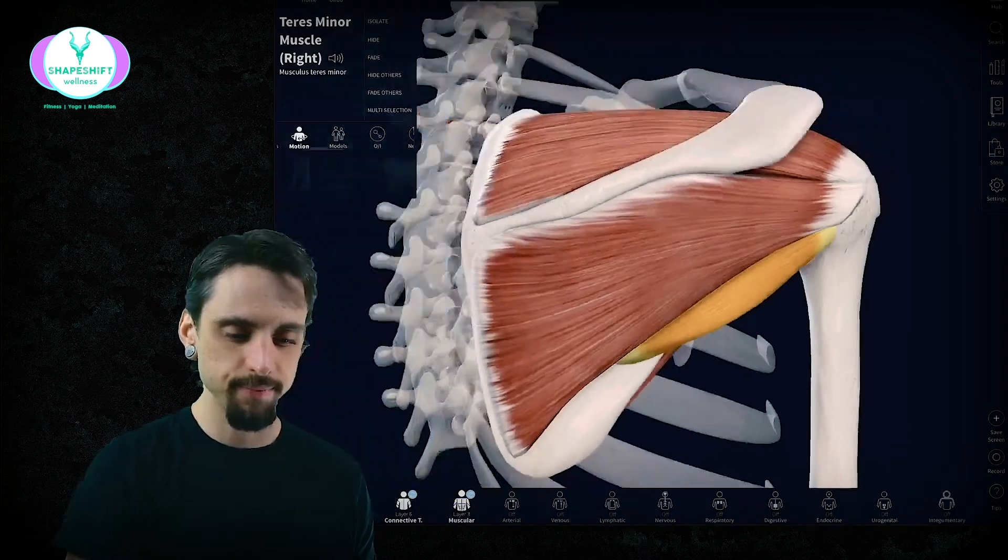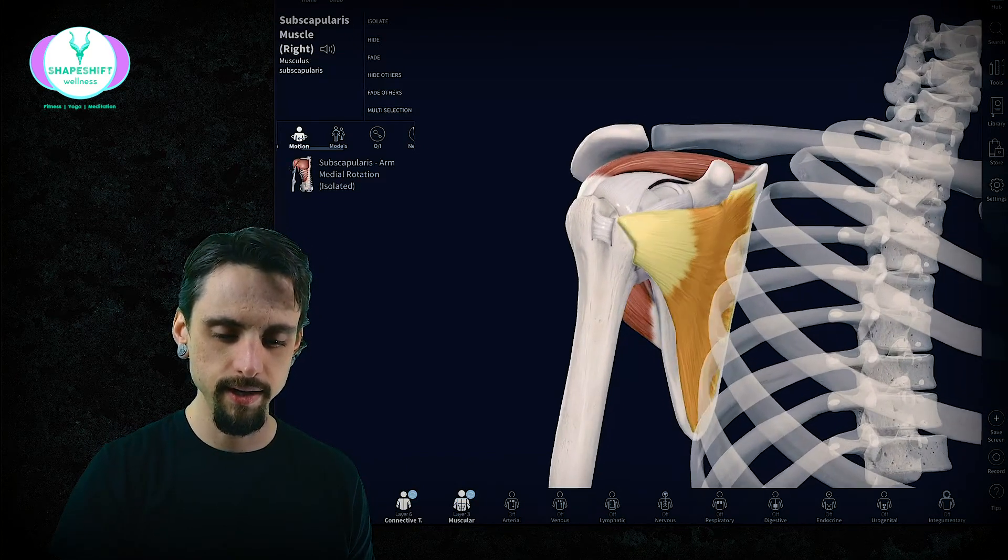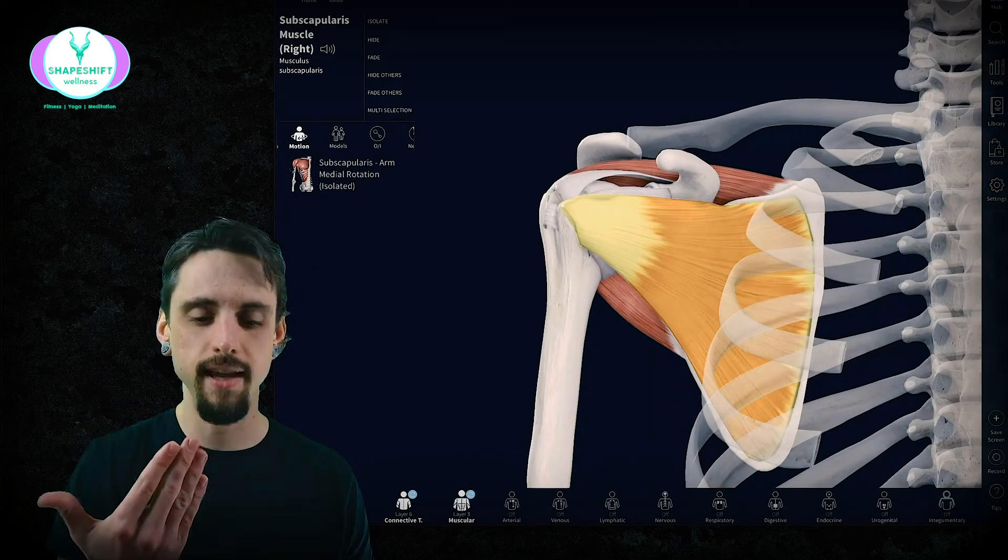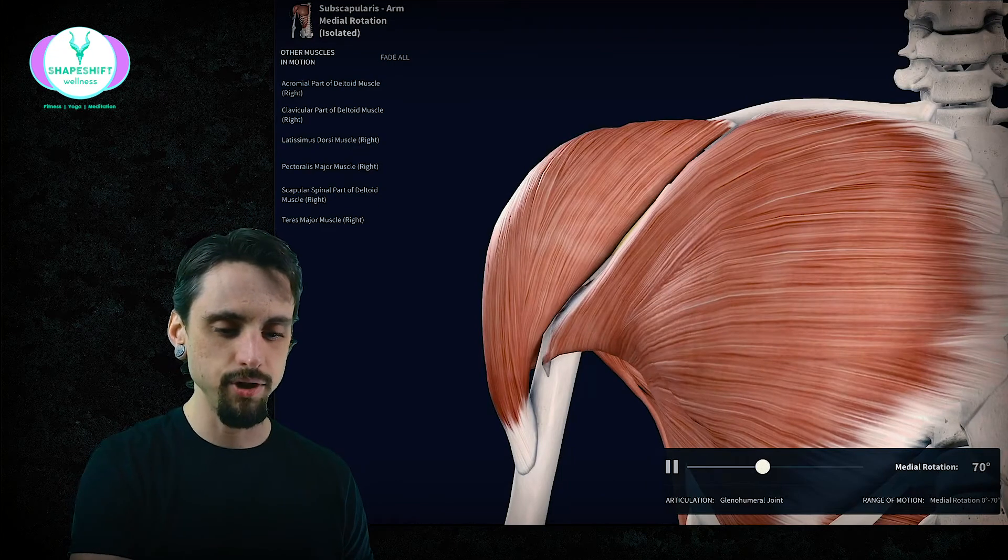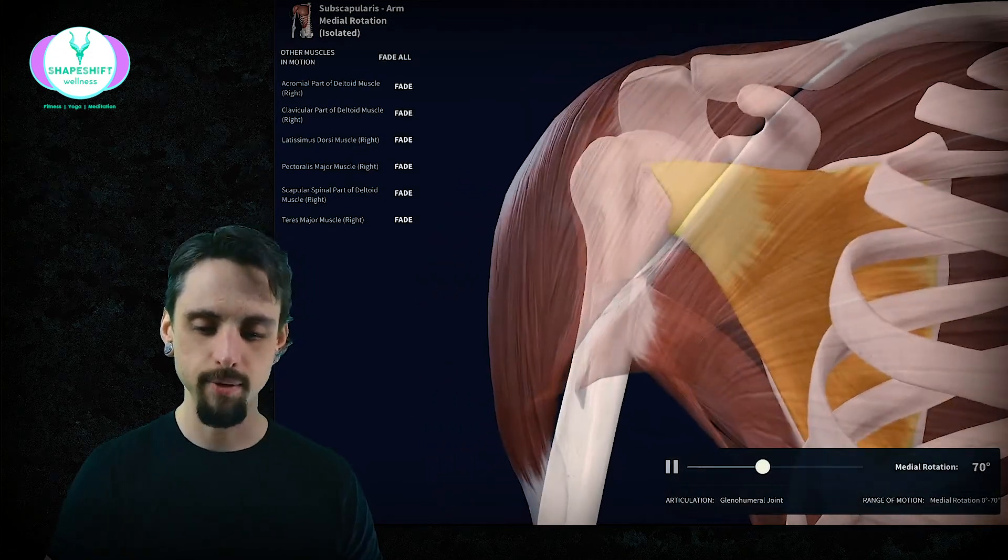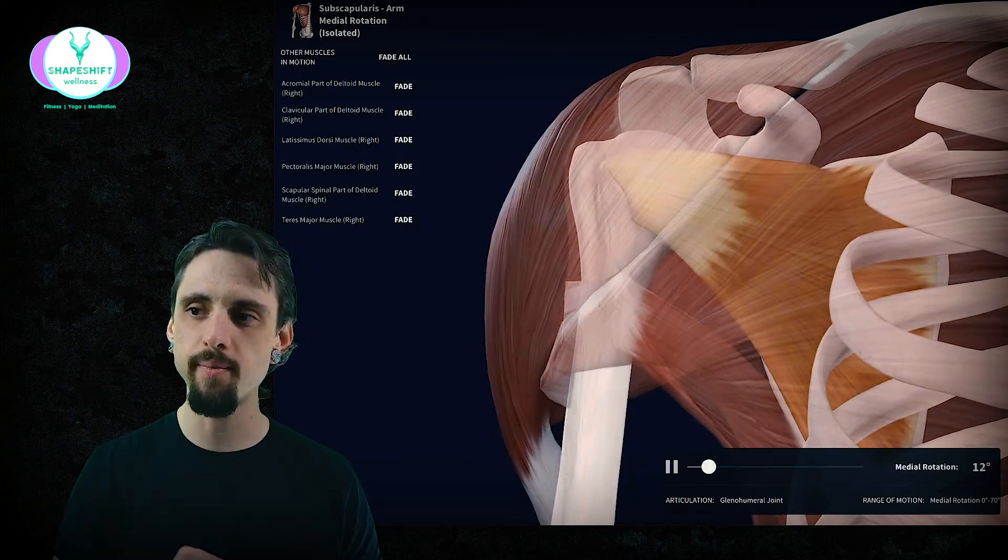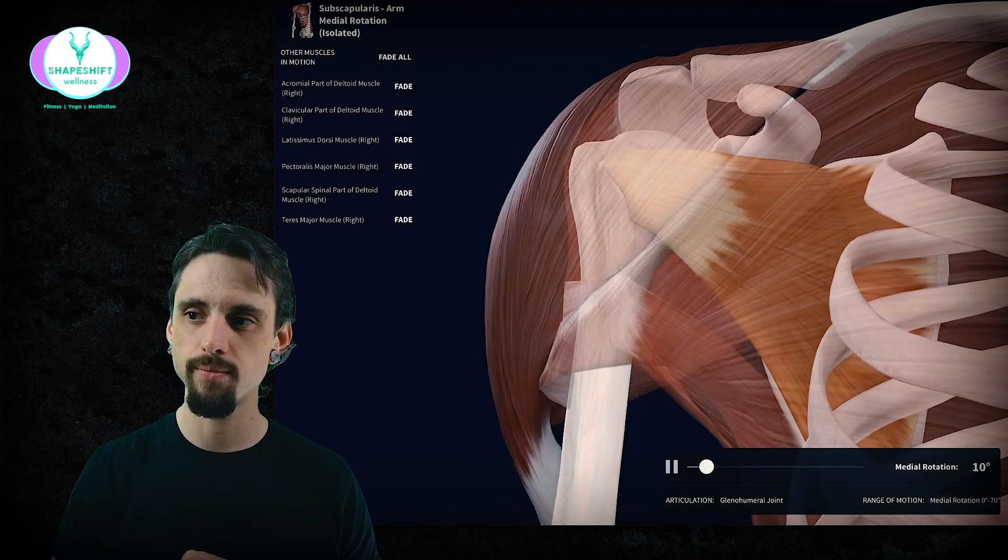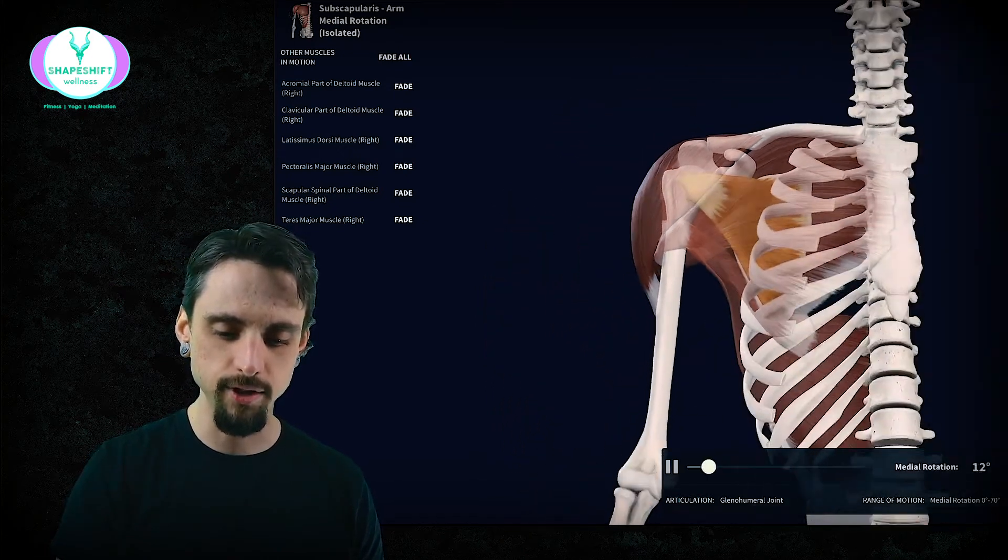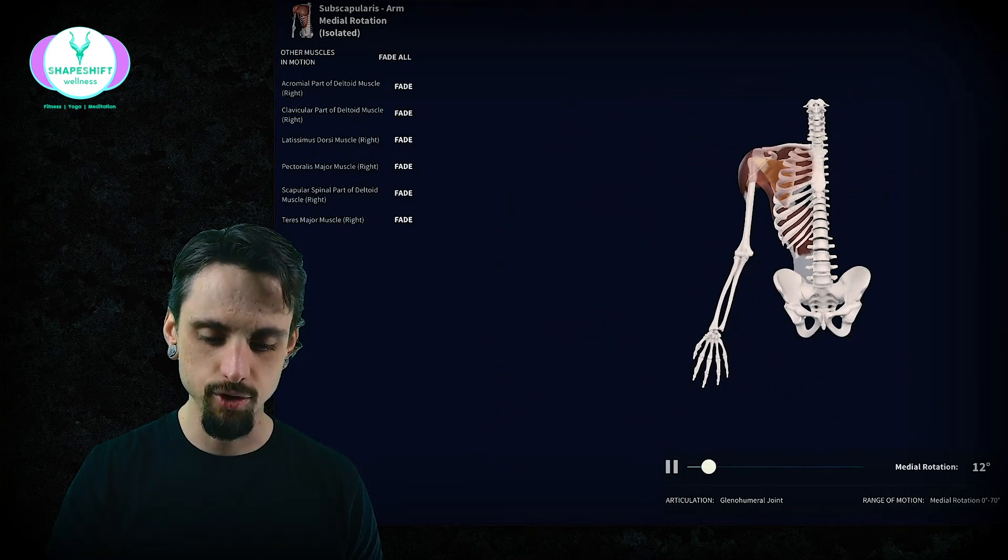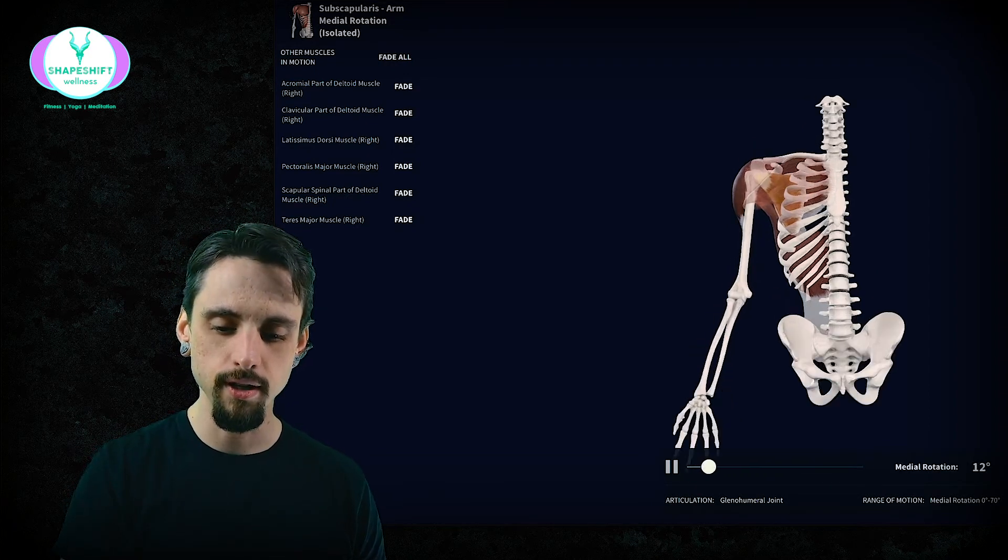Next, subscapularis, right here. It lives on the front side, the anterior face of the scapula, and its primary motion on its own would be—so again, we're looking now at the right shoulder from the front, we're looking at this person from the front and we're looking at the right shoulder. And it contracts and internally rotates. Now let's zoom out just so you can see the arm when it contracts: internally rotate, go back to neutral, contract, internally rotate, go back to neutral, contract.